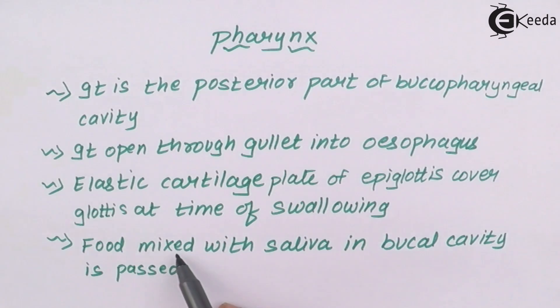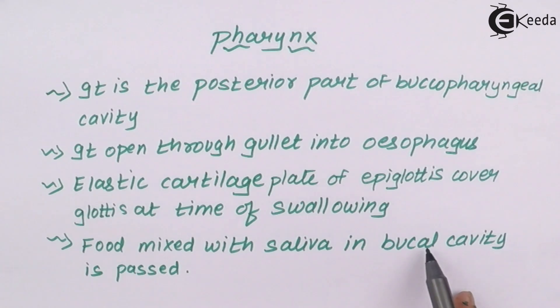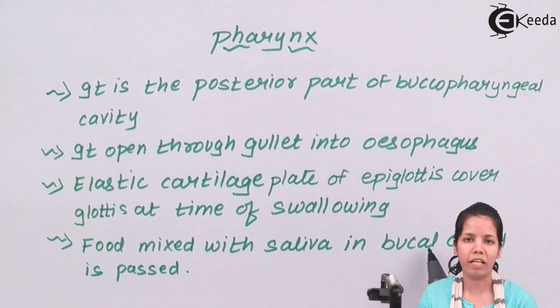Food mixed with saliva, or chewed properly, is passed down in the buccal cavity, or you can say passed down into pharynx. Pharynx never releases any digestive glands or digestive organs because they are very small in length.